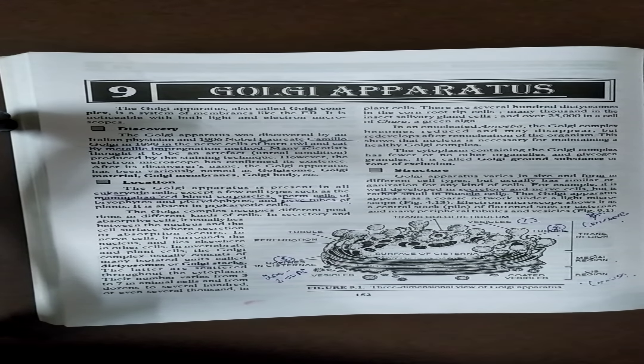Now comes to the origin of the Golgi body. Actually they are originated from the smooth endoplasmic reticulum. So next, last, which we have discussed in this organelle is functions.